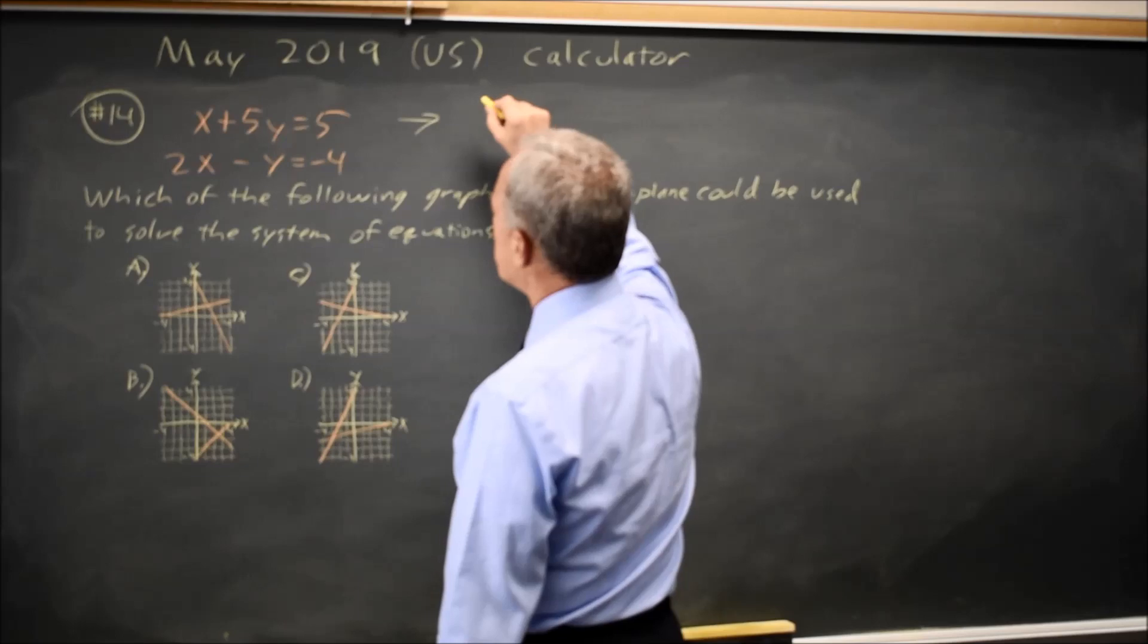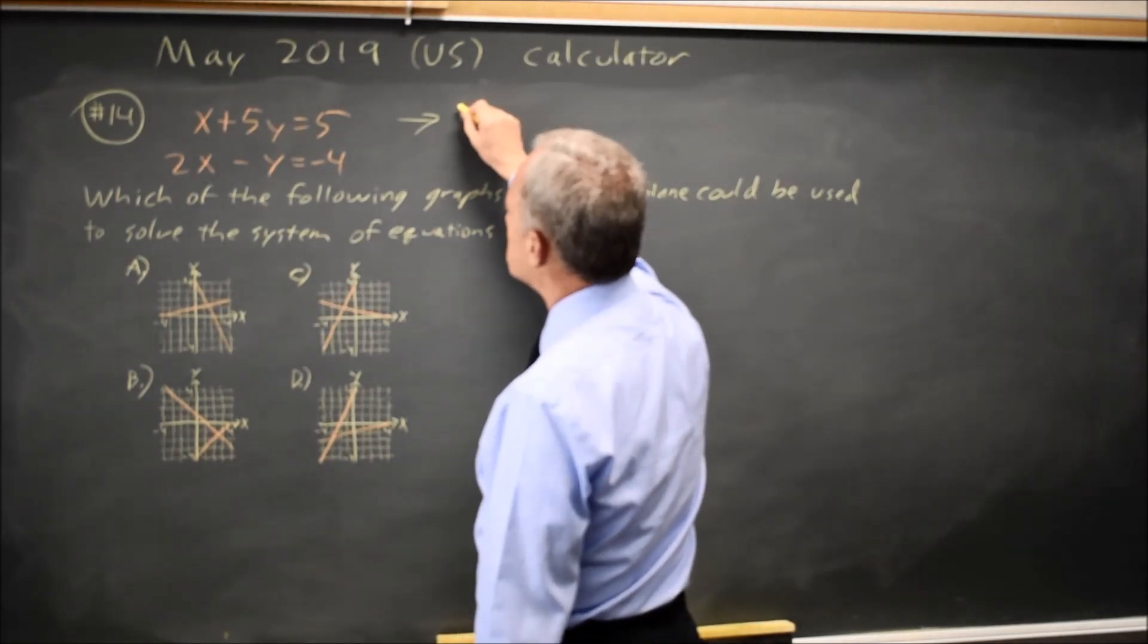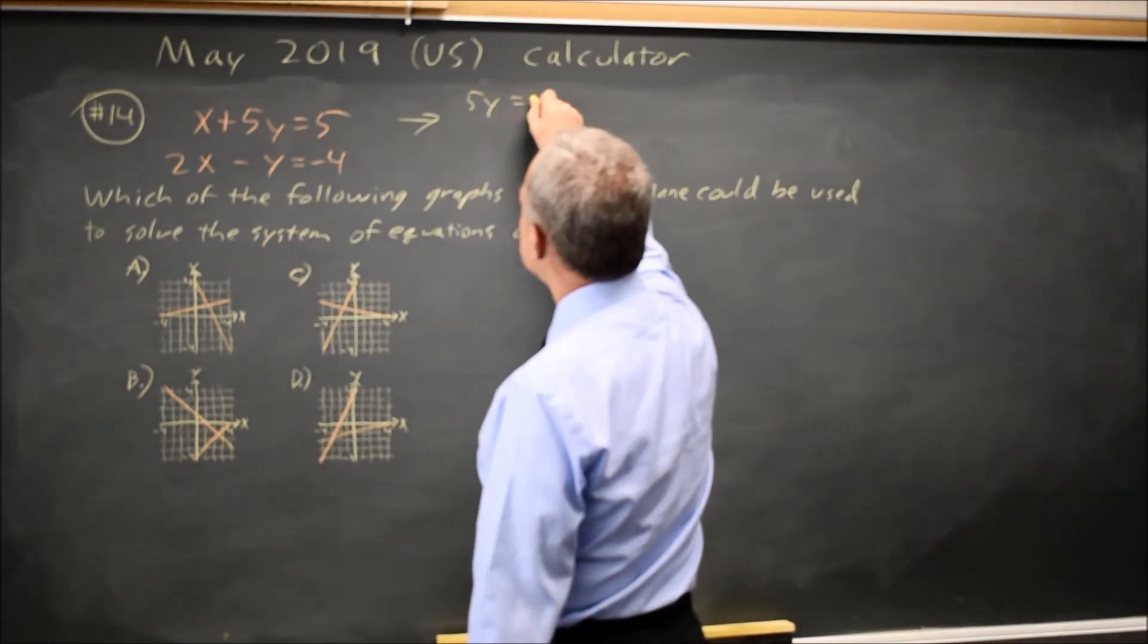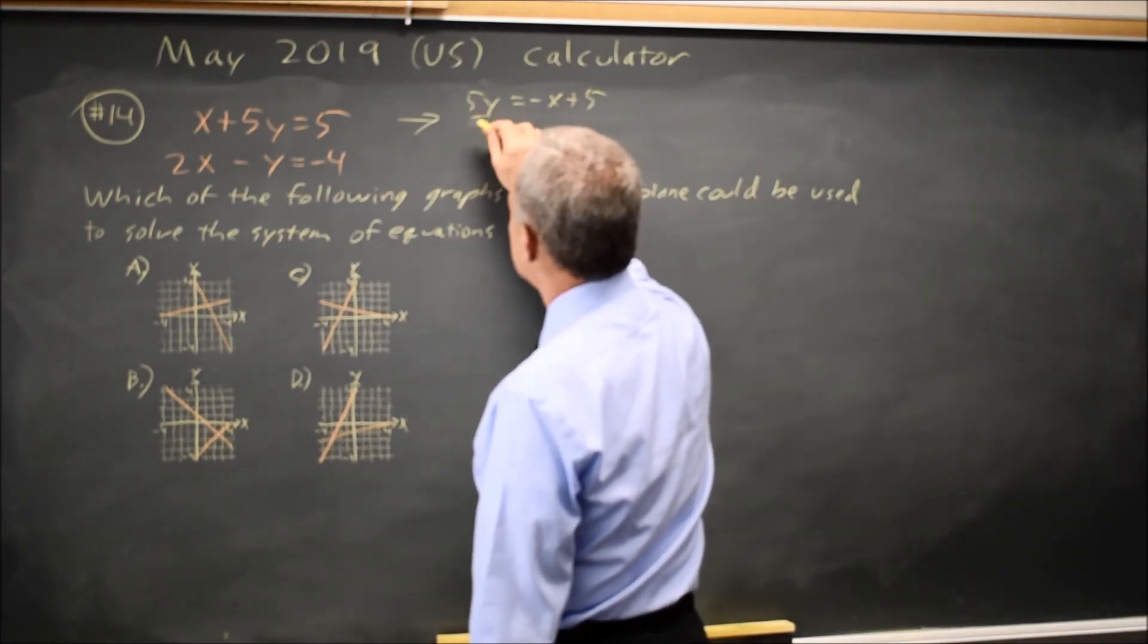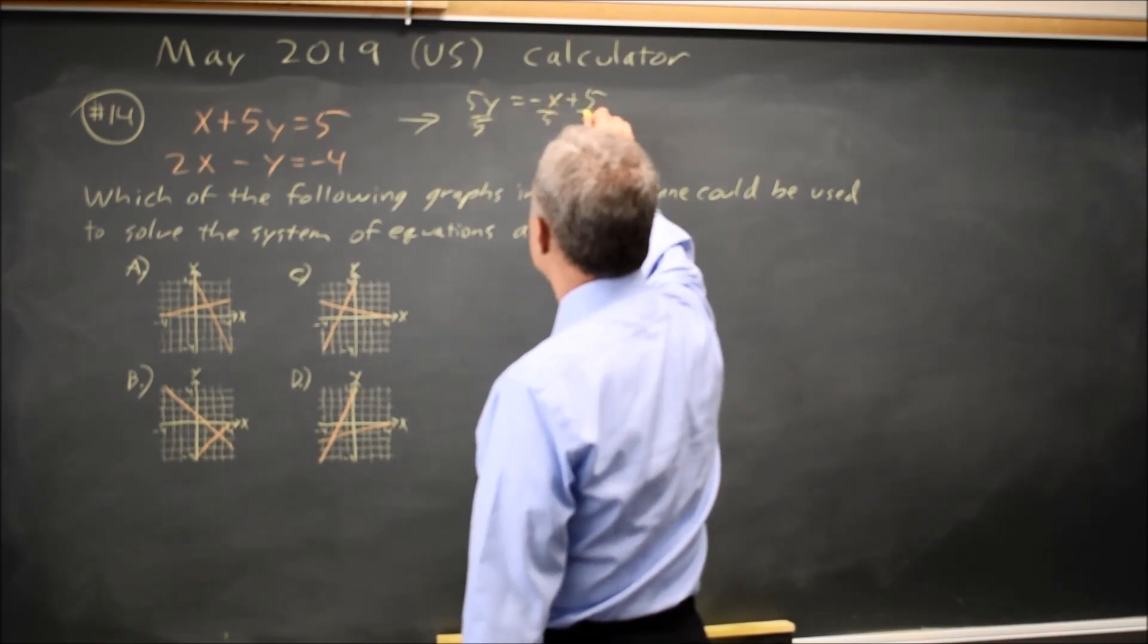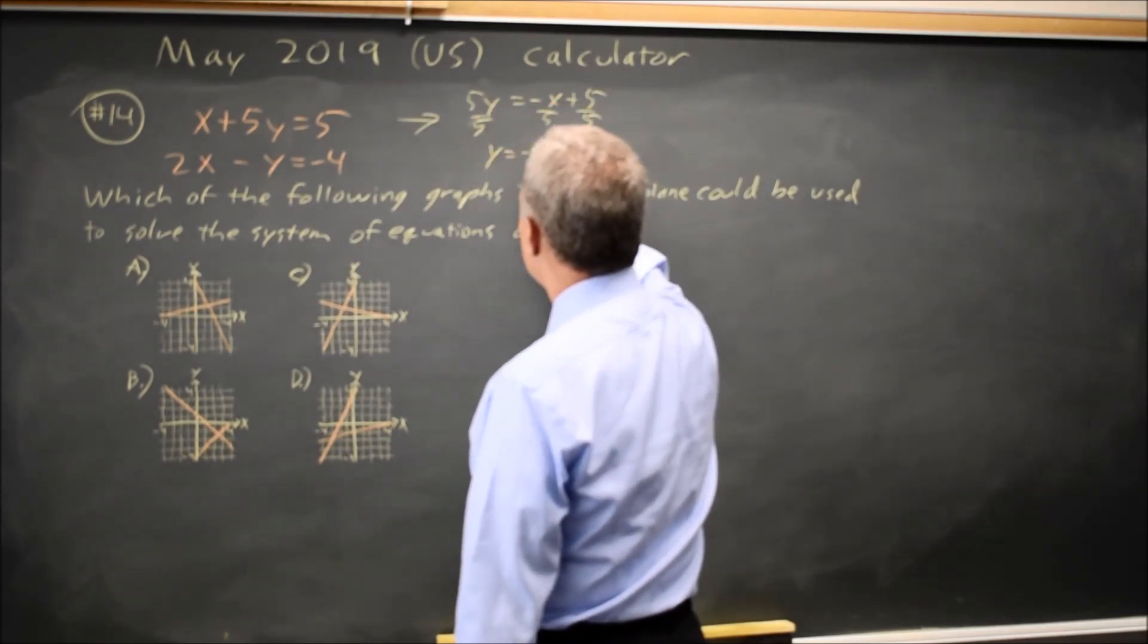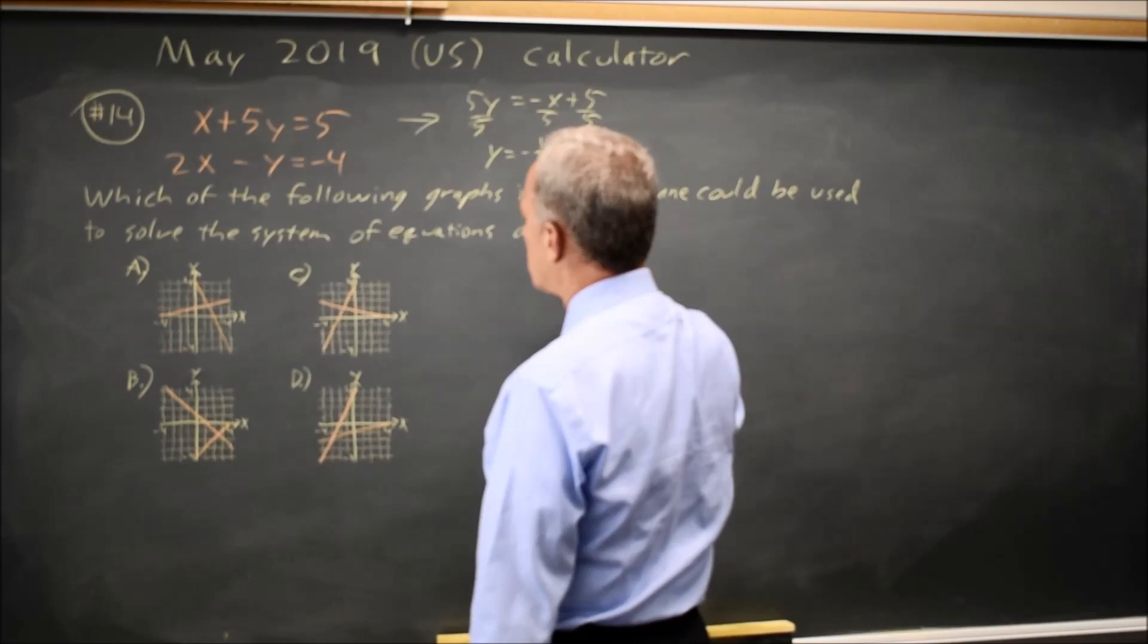So let's put these in slope-intercept form. The first one becomes, if I subtract x from both sides, 5y equals negative x plus 5 divided by 5. Y equals negative 1 fifth x plus 1.